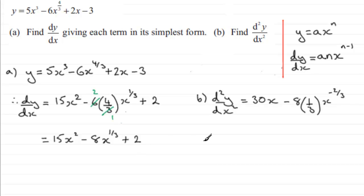The constant differentiates to zero. Clean this up and you've got 30x minus 8 thirds x to the power minus 2 thirds.